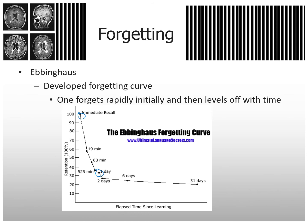Two days later, you remember about a quarter of it. But after that, if you still remember what was going on in that class, you remember most of it. About six days later, you forget a little bit but remember most of it. A month later, you're still remembering about 20% of what you learned.